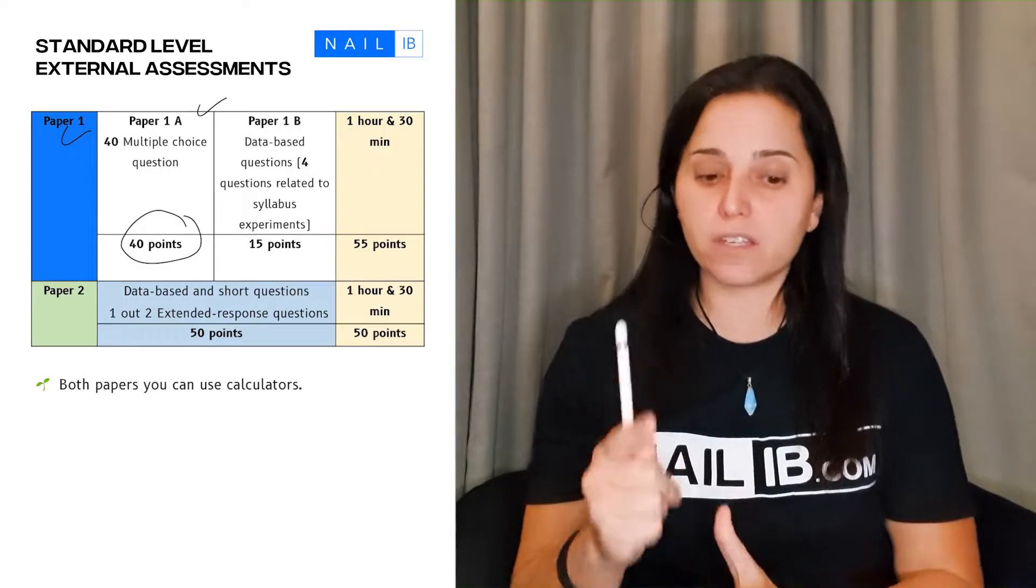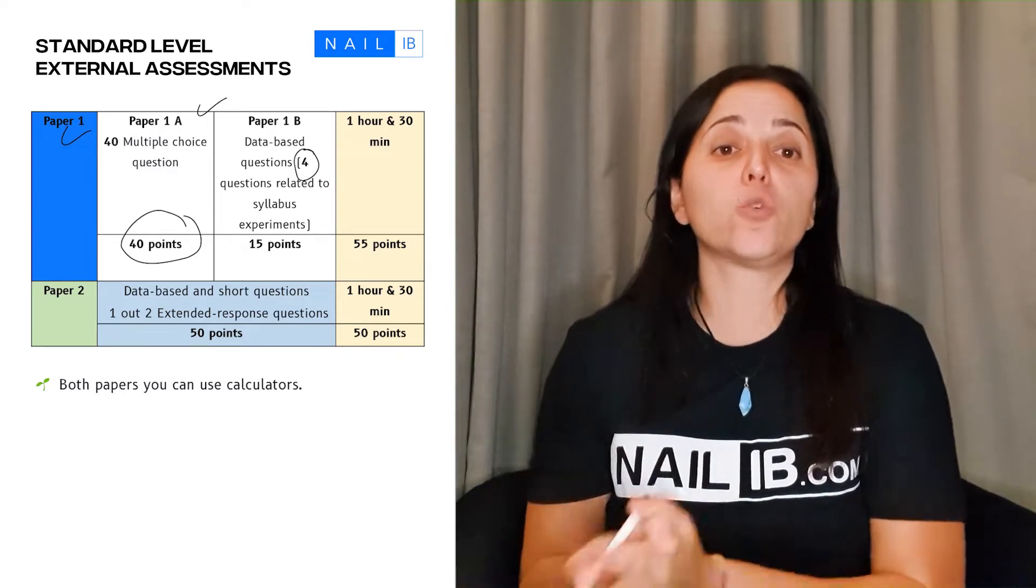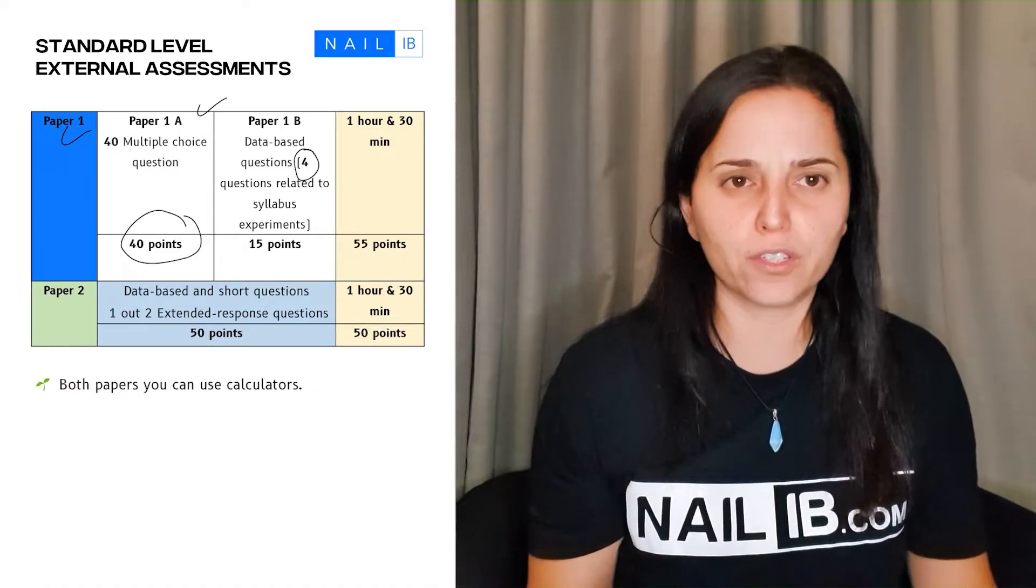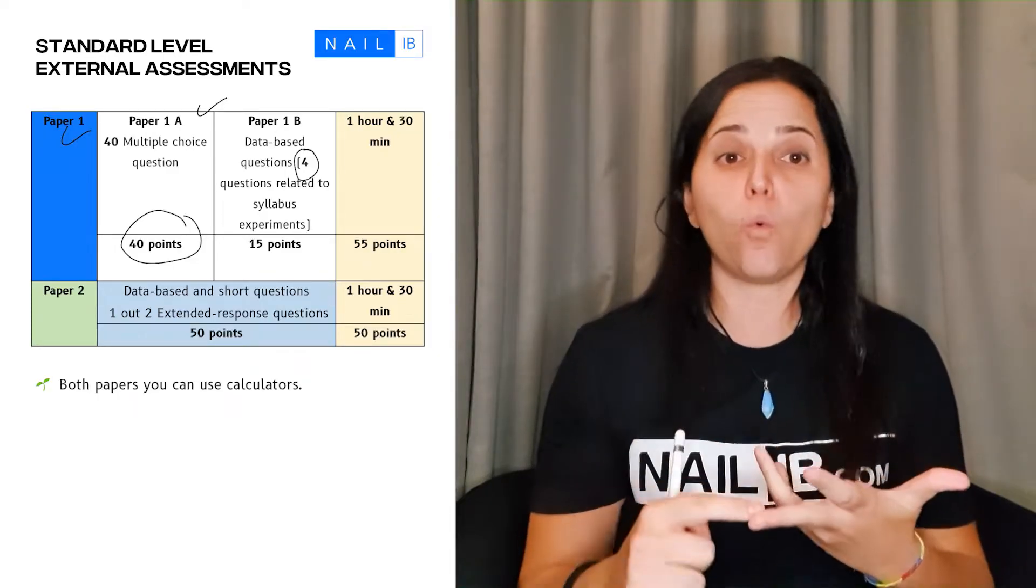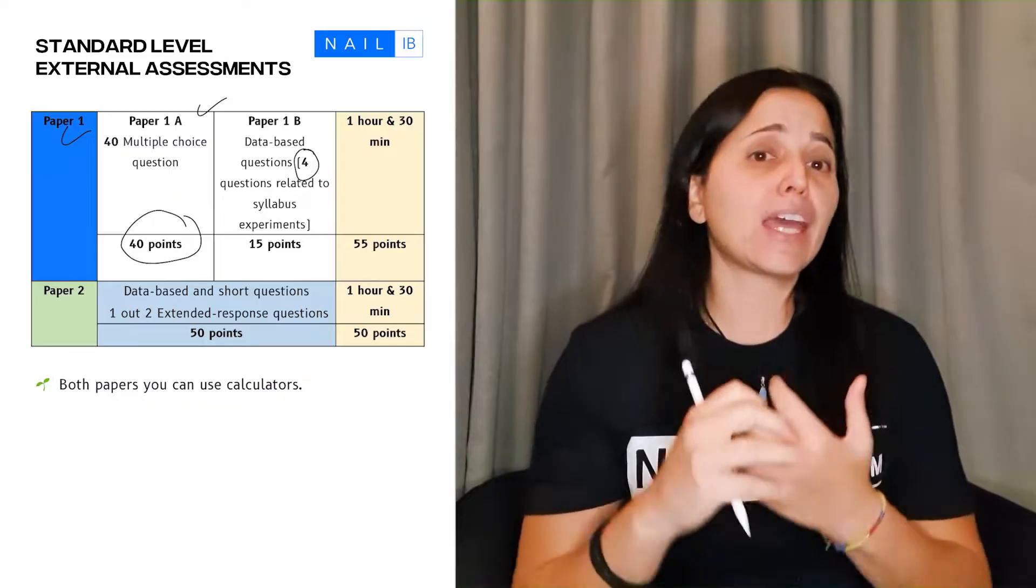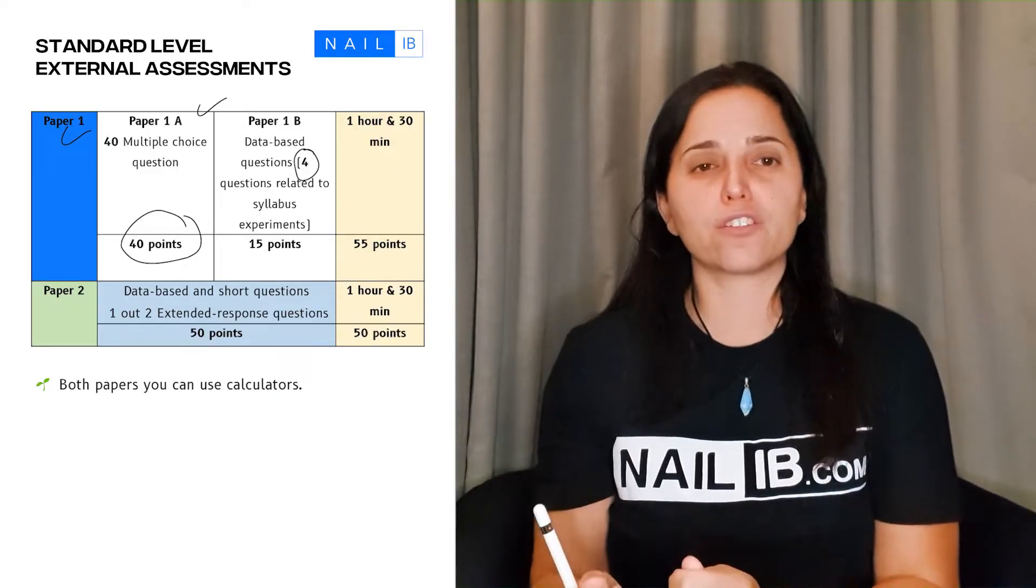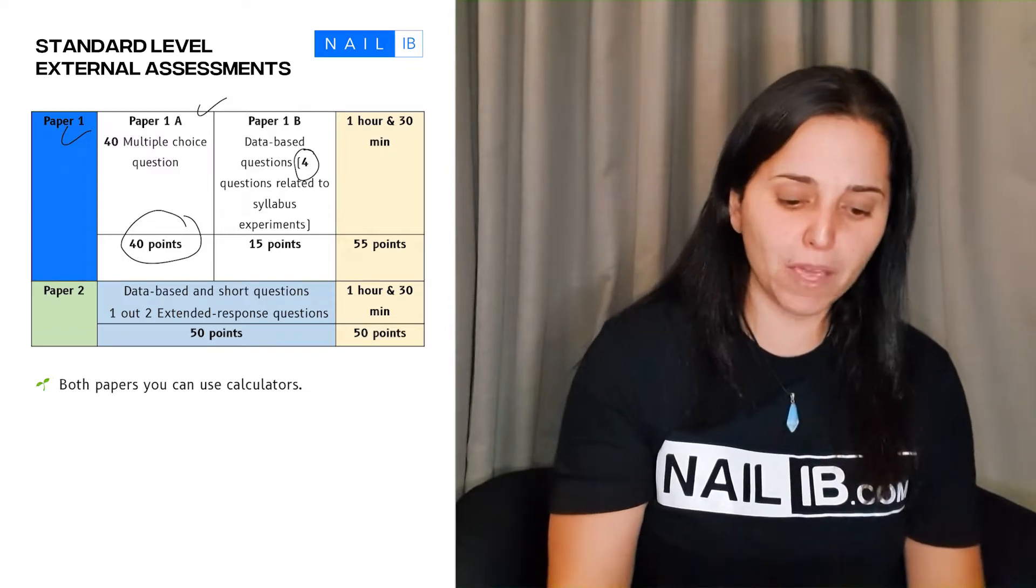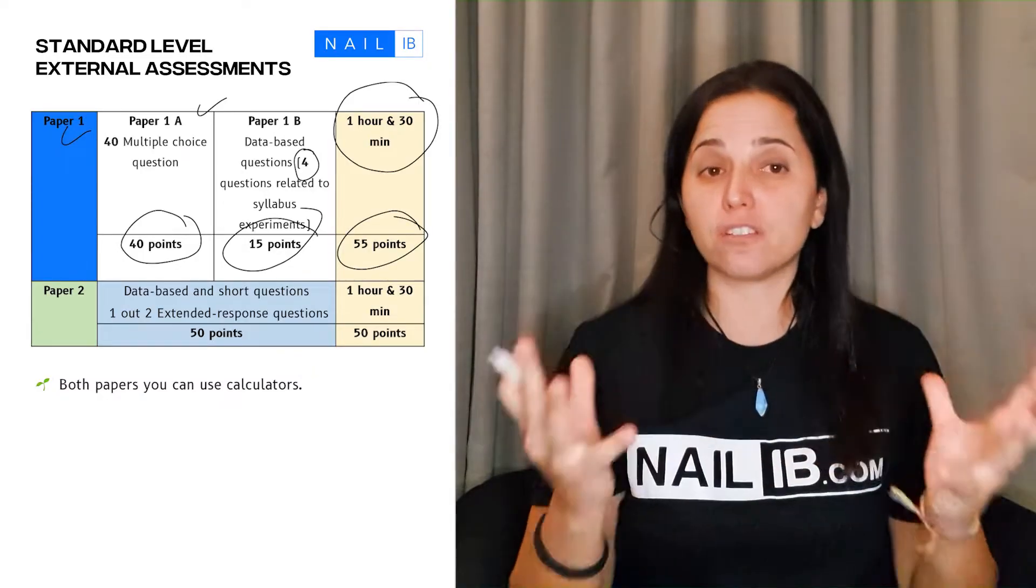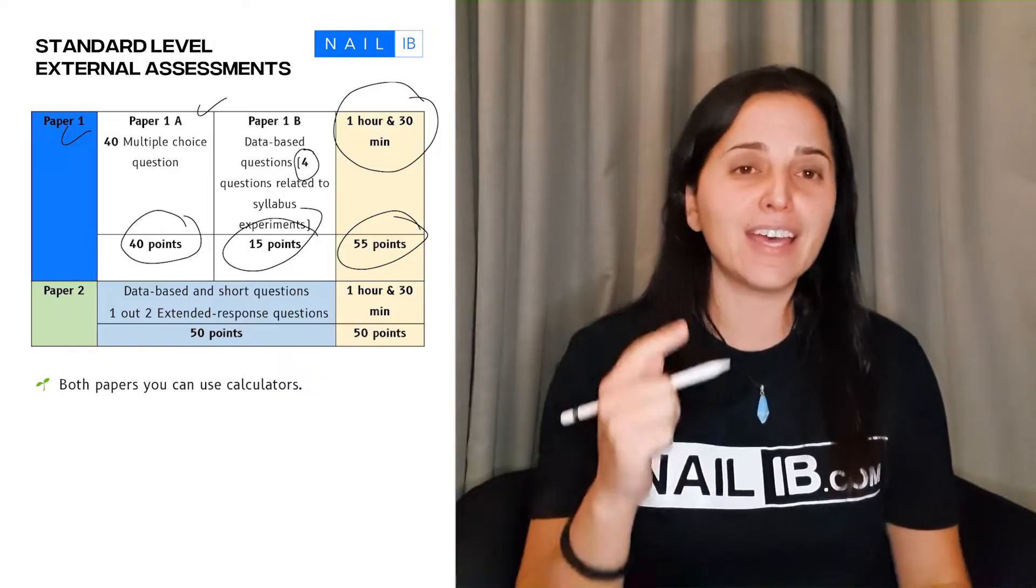Then in section B of paper one, there will be four questions. What are these four questions? These four questions will be related to the experiments that you've done in class. So you really have to focus on the experiments—the independent, the dependent, what kind of equipment you're using, how to use the equipment, how to assess graphs and analysis, and drawing conclusions and evaluation. It's very important to take those labs seriously because four questions will be based on the labs you did in class, and that will be around 15 points. Paper one has about 55 points, and you have an hour and a half to conduct the entire paper.